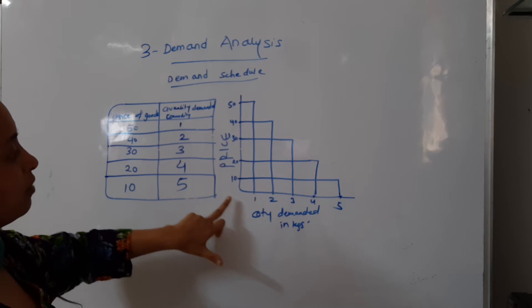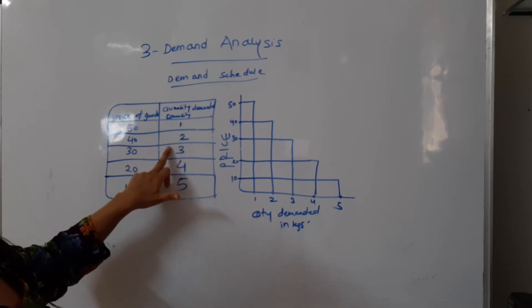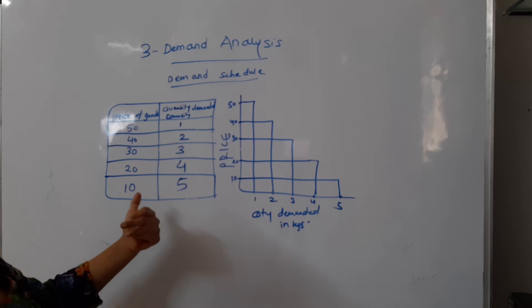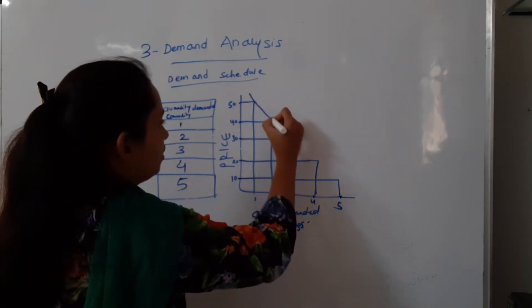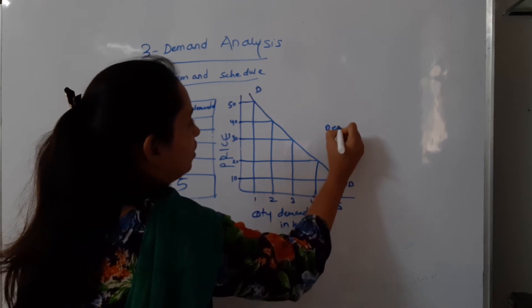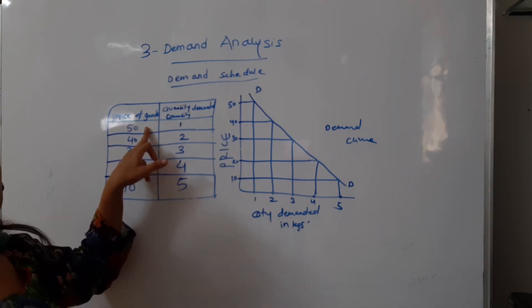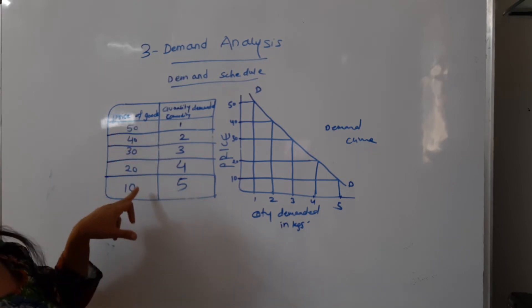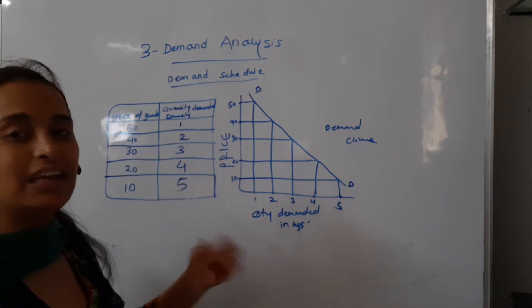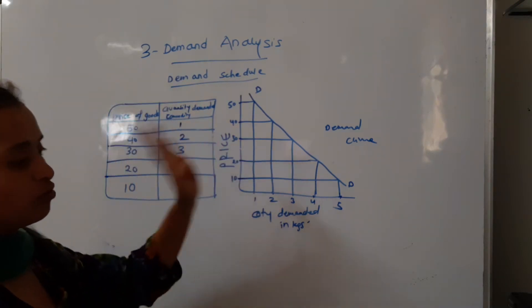When prices are low, demand is increased. We join these points together. This is known as the demand curve — as there is a decrease in prices of goods, the quantity demanded is increasing. Just like prices are cut, demand is increasing. This is the tabular and graphical presentation of demand.